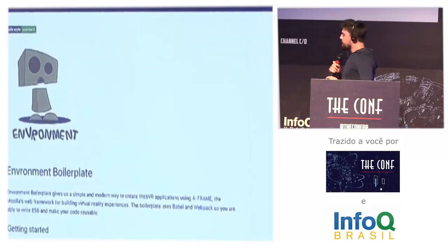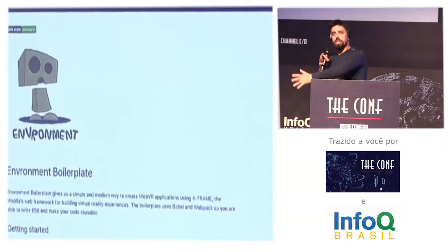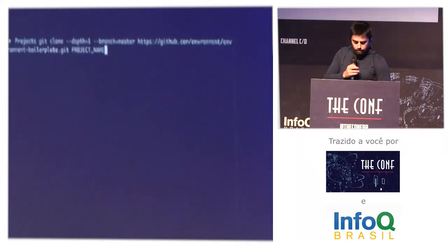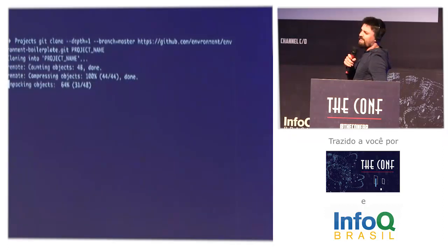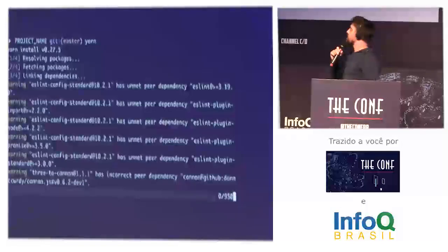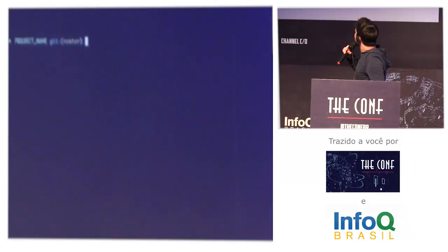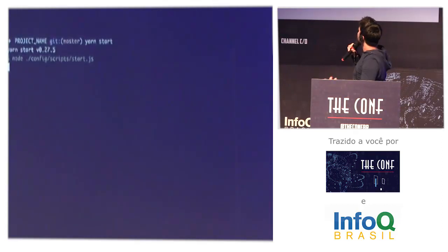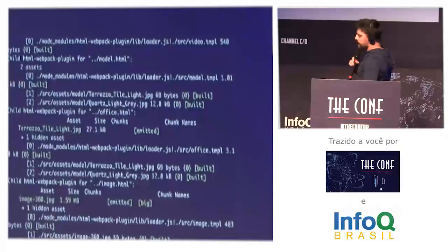I created some GIFs to show you, because you have just three steps to run a new project working with A-Frame, Webpack, Babel, and Nunjucks. First step: just clone the project. Second step: install the NPM packages. After the last step, yarn start — you install what you need and you have the server. After that, you can access a blank page, but you will have some samples like a scene with an image you can manipulate.